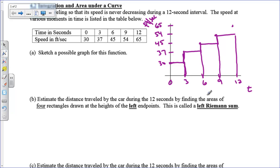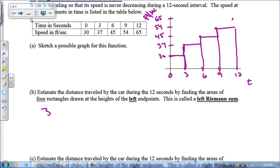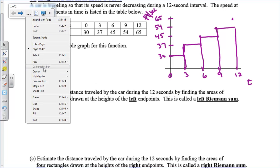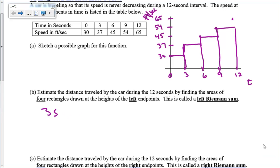The areas of each rectangle use a width of 3. Using units: 3 seconds times 30 feet per second — the seconds cancel and you get feet. That's why the area under the curve of a speed graph gives you total distance traveled. The first rectangle is 3 seconds wide at a height of 30 feet per second.